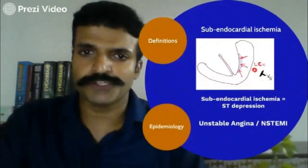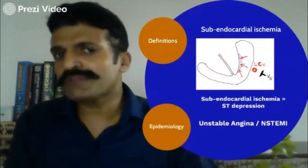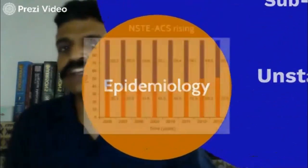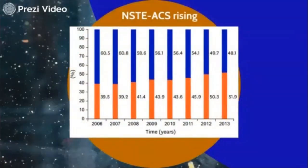So why is this important? Simply because even though whenever you think about a myocardial infarction you think about STEMI, if you look at this graph you will see that over the past few years — the one in blue is STEMI and the lower part in orange is NSTEMI — on the x-axis we have time, and as you can see over the years, NSTEMI is increasing and STEMIs are decreasing.